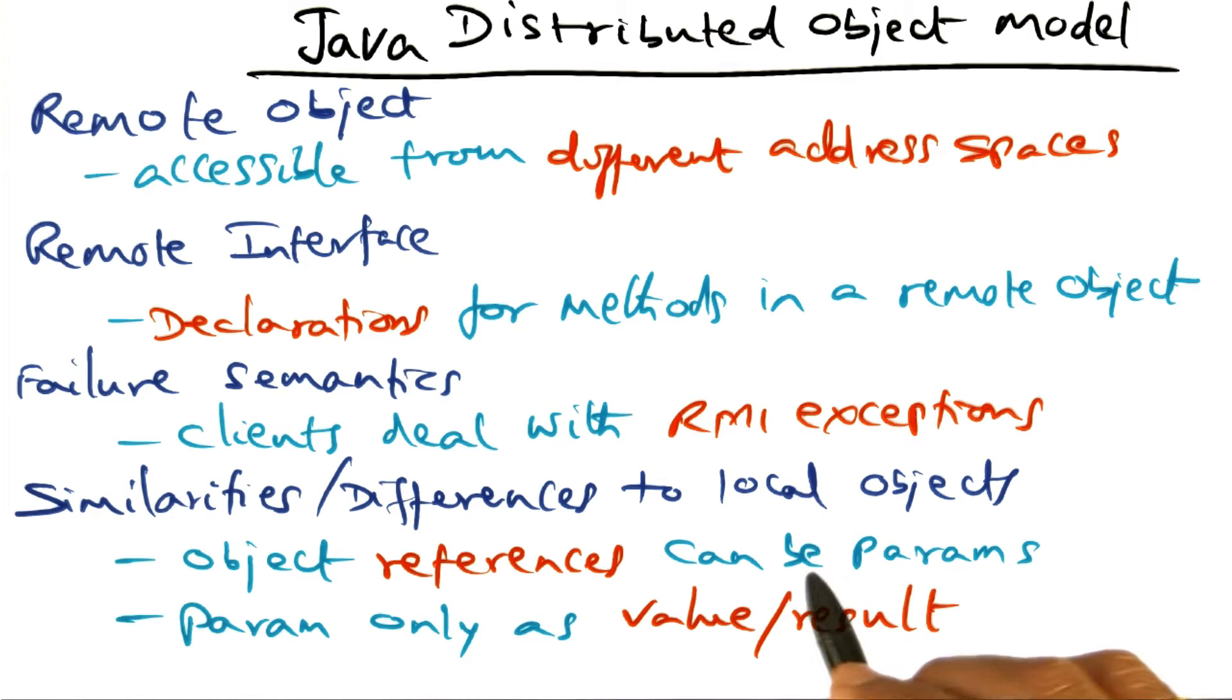And there are some similarities and differences between local objects in Java and remote objects. The similarity is that you can pass object references as parameters when you make an object invocation. An object invocation arguments of that invocation could include object references. That's the similarity.